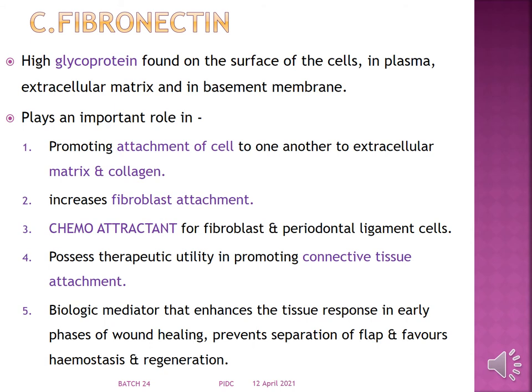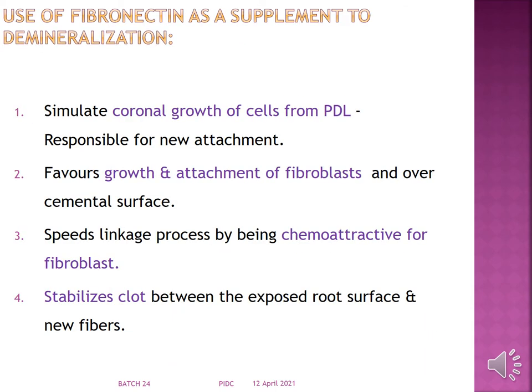Fibronectin increases fibroblast attachment and acts as a chemo-attractant for fibroblasts and periodontal ligament cells. It possesses therapeutic utility in promoting connective tissue attachment and acts as a biologic mediator enhancing tissue response in early phases of wound healing. It prevents separation of flaps, favors hemostasis, and stimulates coronal growth of cells from the periodontal ligament responsible for new attachment.